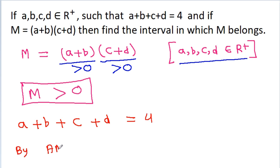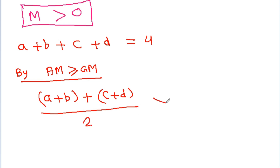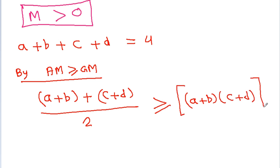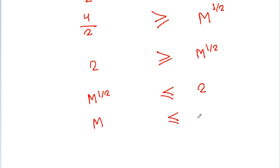By AM-GM, a plus b plus c plus d divided by 2 is greater than or equal to the square root of a plus b times c plus d, which equals m to the power 1 by 2. Since a plus b plus c plus d is 4, we get 4 by 2, i.e., 2, is greater than or equal to m to the power 1 by 2. So m to the power 1 by 2 is less than or equal to 2, and therefore m is less than or equal to 4.